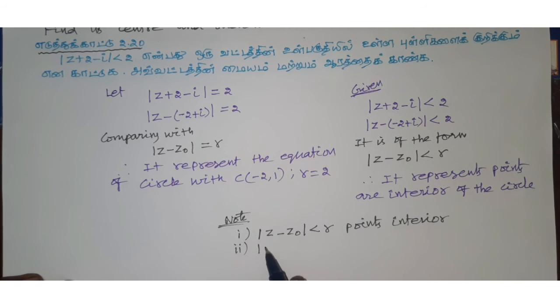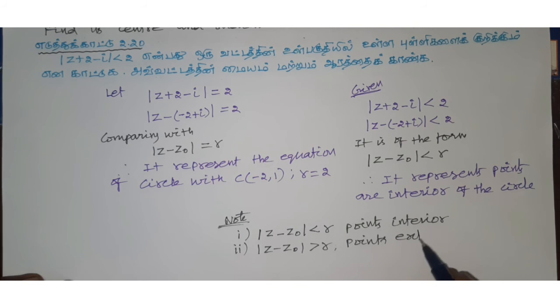When modulus z minus z naught is greater than r, the points are exterior points on the exterior.